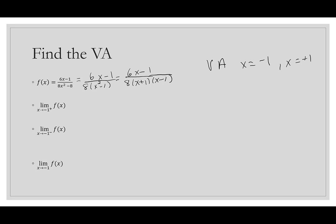For the limit as x → -1⁺, use a number like -0.9. The numerator 6(-0.9) - 1 is negative. On the bottom: 8 is positive; -0.9 + 1 is positive; -0.9 - 1 is negative. So we have negative / (positive × positive × negative) = negative/negative = positive infinity.